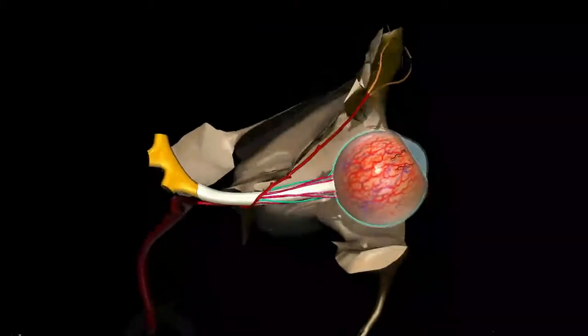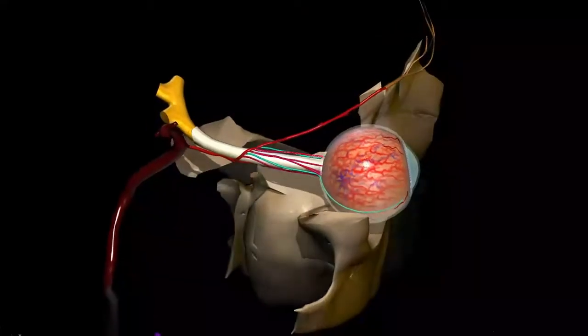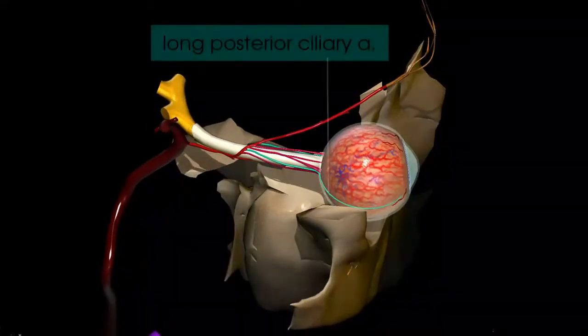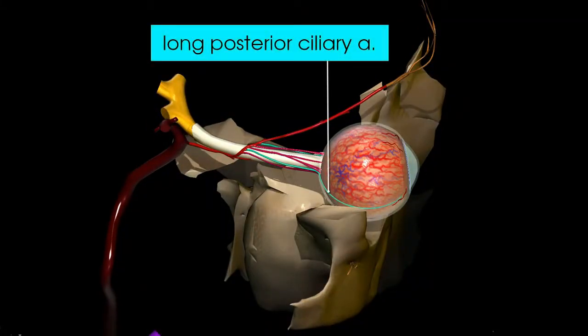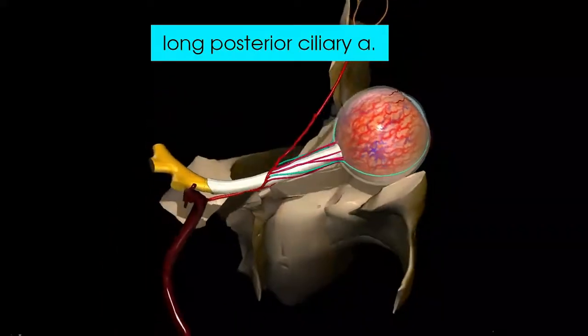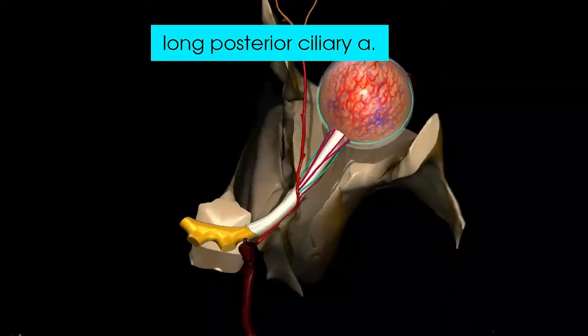The long posterior ciliary arteries run a longer course medially and laterally around the sides of the optic nerve, and pass to the anterior aspect of the eyeball piercing the choroid layer.